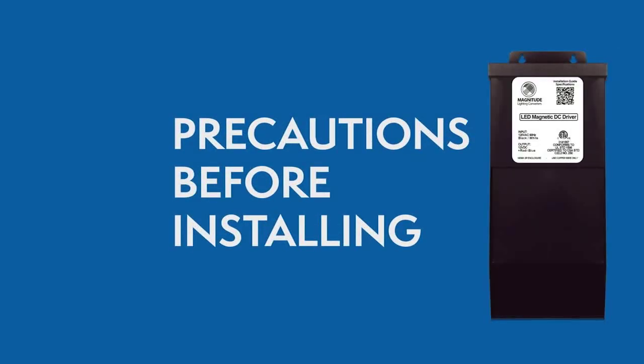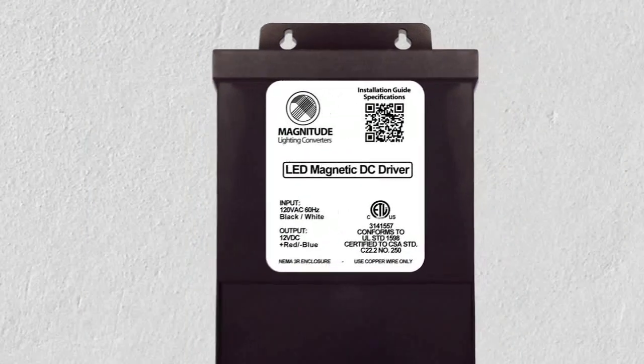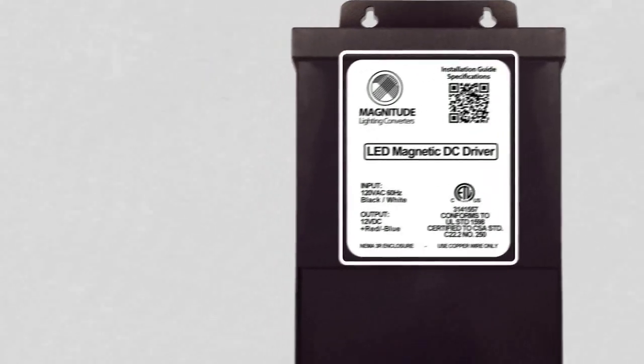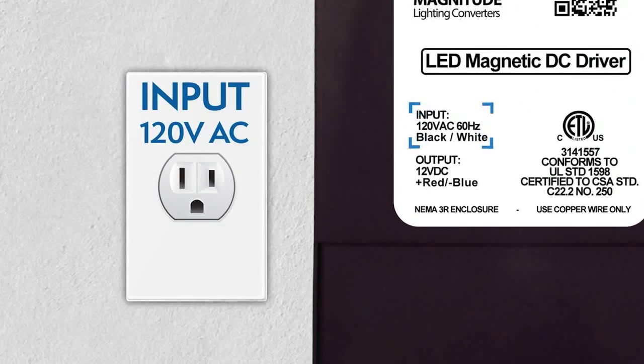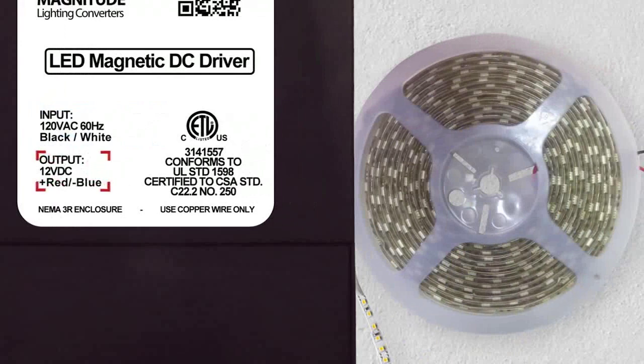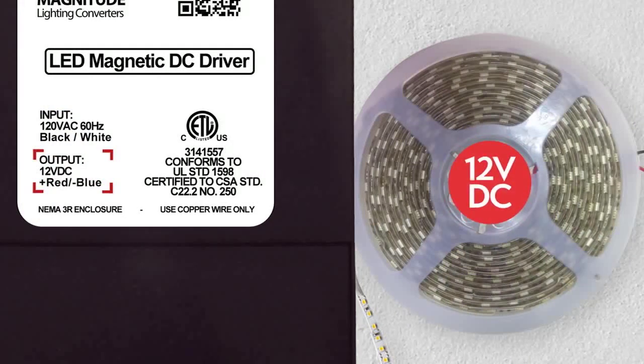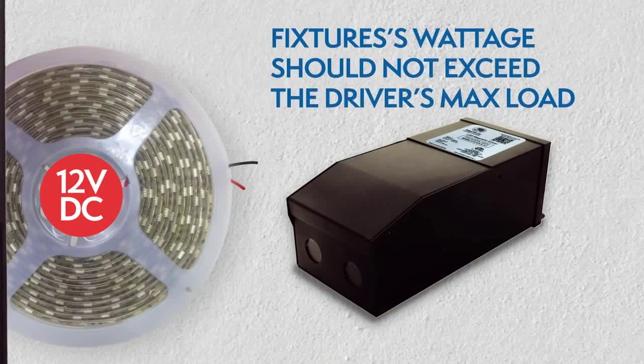Make sure you have the right driver for your lighting application. Always check the driver's label to make sure it has the proper input voltage of 120 volt and 12 VDC output voltage. Check your light fixture wattage to make sure it is not above the driver's max load.